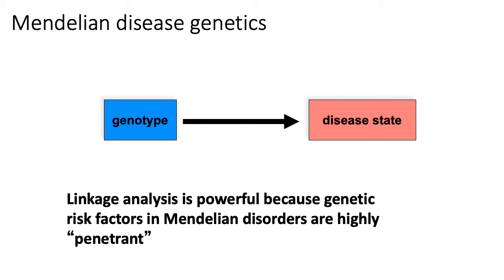It's worth pointing out that you can have highly penetrant variants, but that doesn't mean that every disease incidence is caused by that genetic variant. Because if that genetic variant is rare, then even if it causes the disease every time you see that genetic variant, if it's rare, it's not responsible for the vast majority of cases of a particular disease, for example.